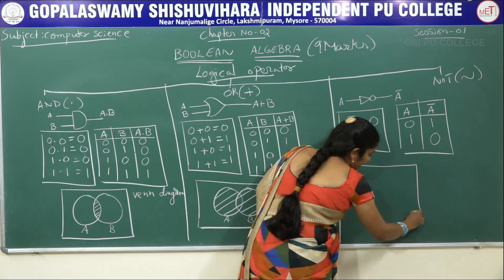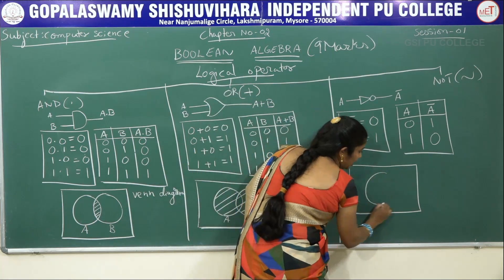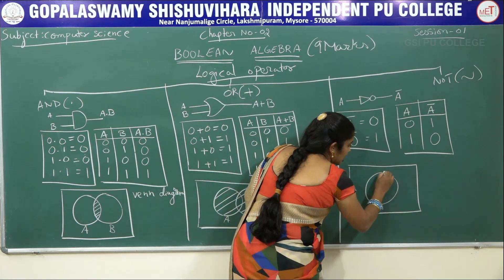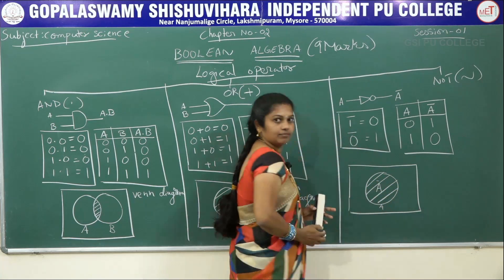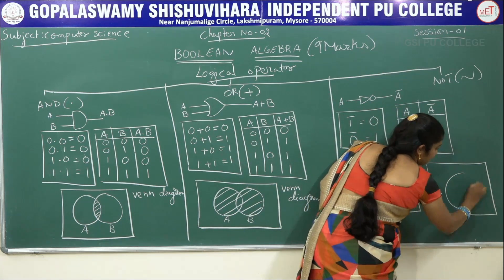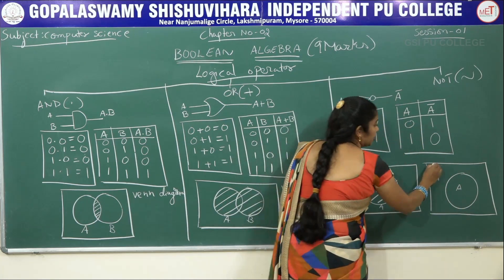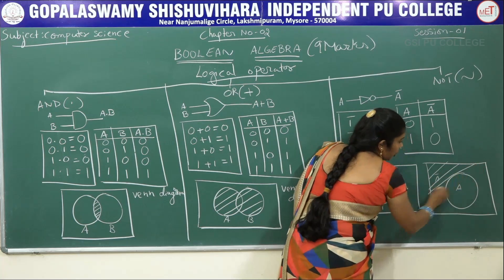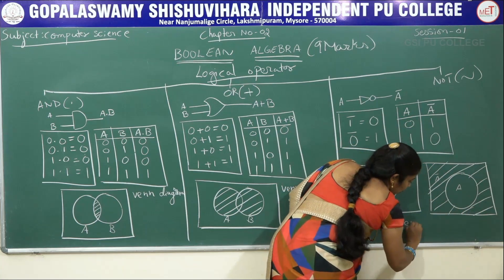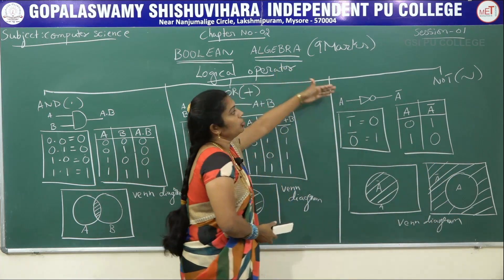For the NOT gate Venn diagram, since there is only one input, we take one circle representing A. A-bar means only the outer part of the circle is shaded, or alternatively the inner part can be shaded. You can shade either the inner or outer part to represent the NOT operation in the Venn diagram.